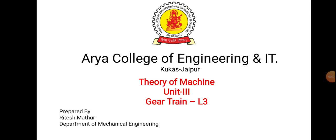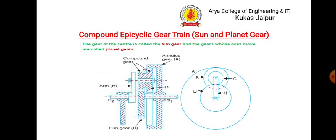Hi, this is Ritesh Mathur from the department of mechanical engineering. In today's lecture we will discuss problems on compound epicyclic gear train. The compound epicyclic gear train is also known as sun and planet gear. The gear at the center is called the sun gear, which is gear number d, and the gears whose axis move are called planet gear — gear number b and c.